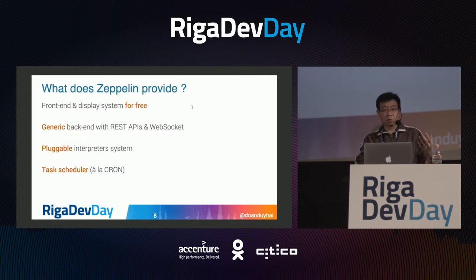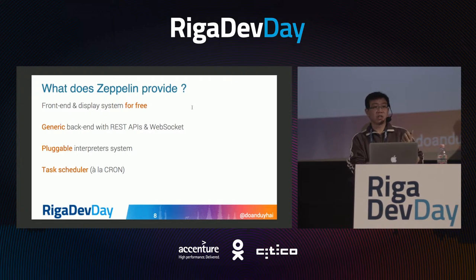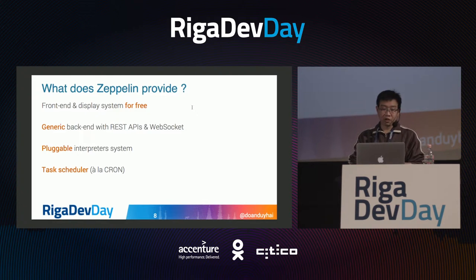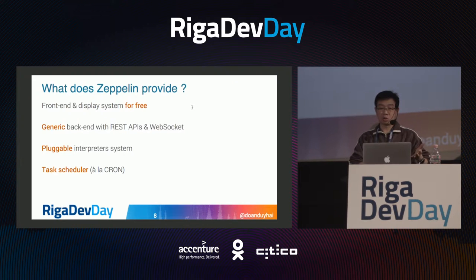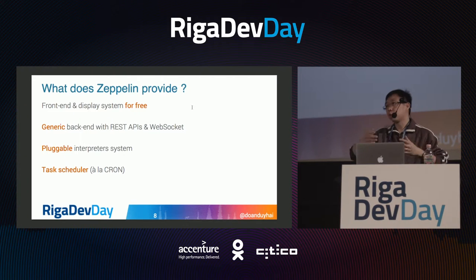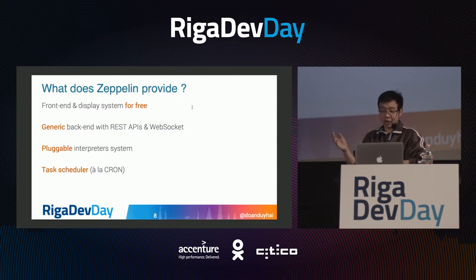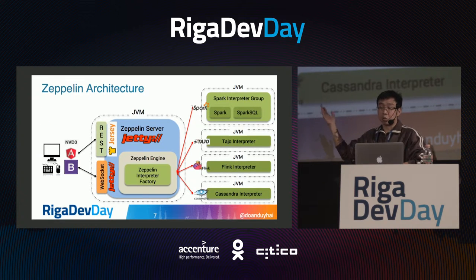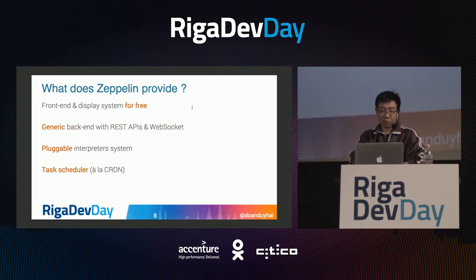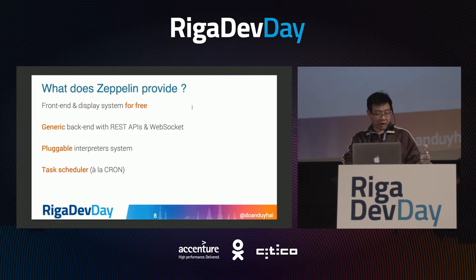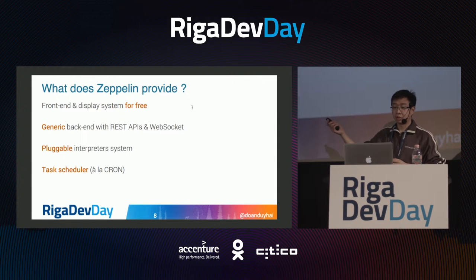So what can you get with Zeppelin? Zeppelin offers you a front end and a display system for free — all this web-based interface is free. You have a generic backend with REST API, so if you don't want to use their web interface, you can create your own and call the backend server via REST API. You have a pluggable interpreter system — you can choose Spark, Cassandra, Shell, PostgreSQL, whatever you wish. They also offer a task scheduler with a cron-like system.